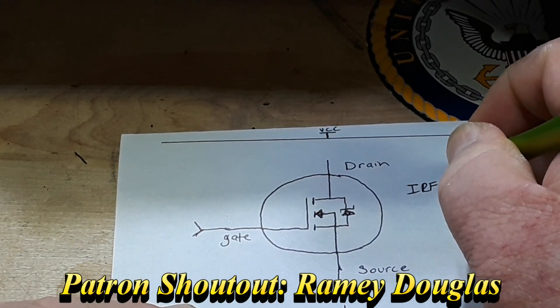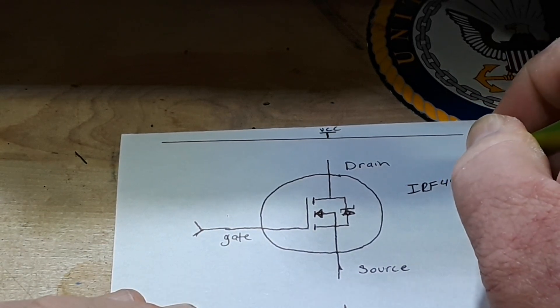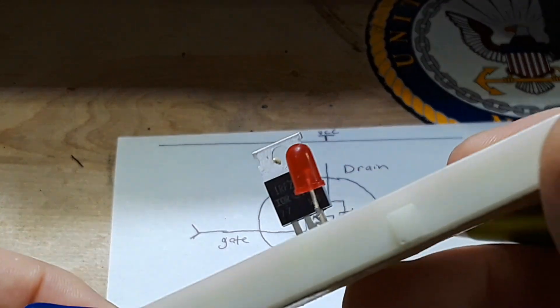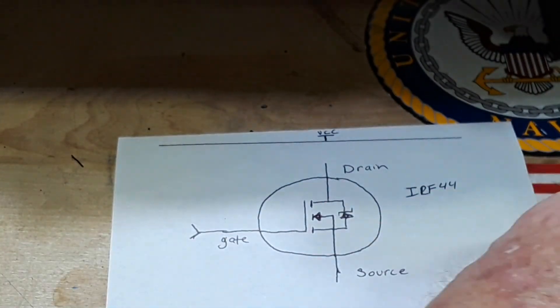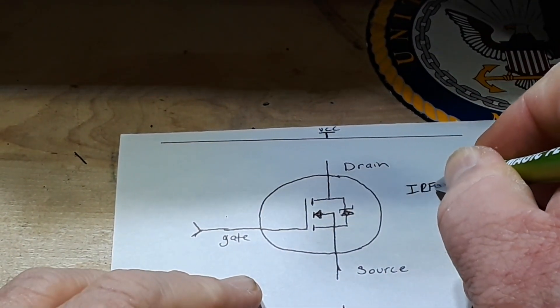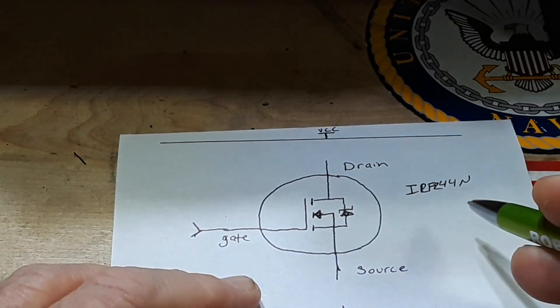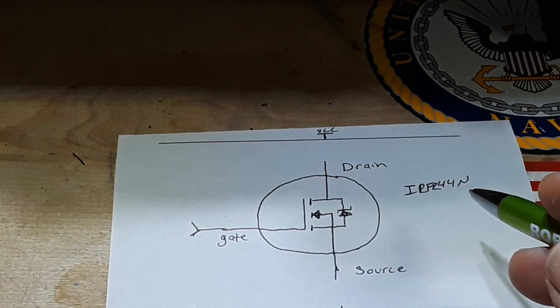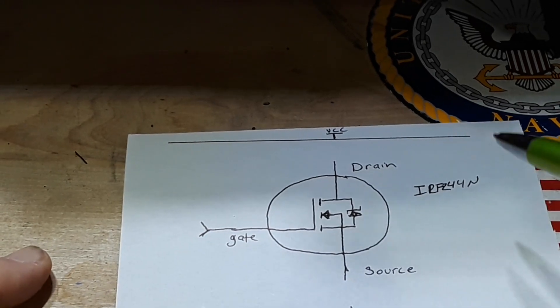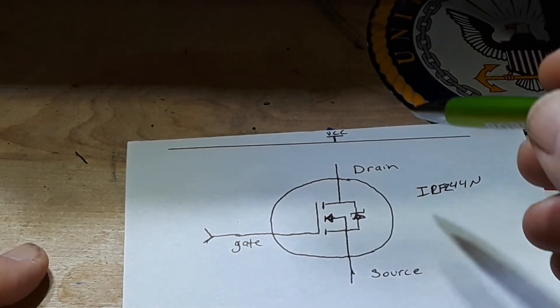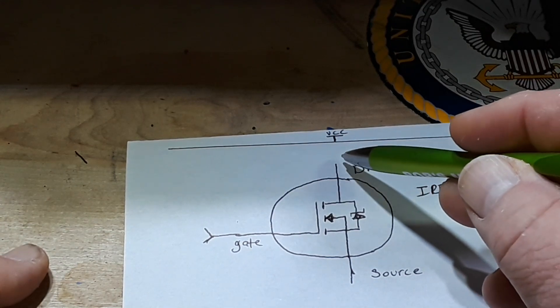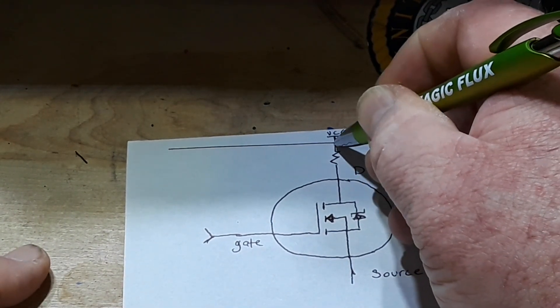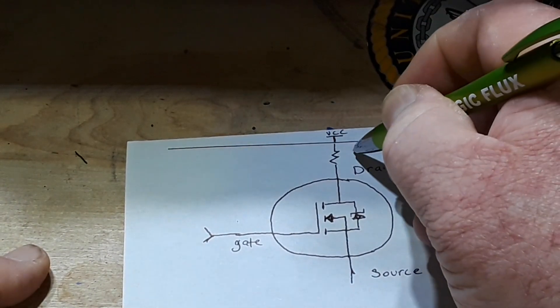IRFZ44N, which is a really common enhancement mode MOSFET. So what we're doing is we are connecting the drain of the MOSFET to VCC through a resistor, in this case just a 220 ohm resistor.